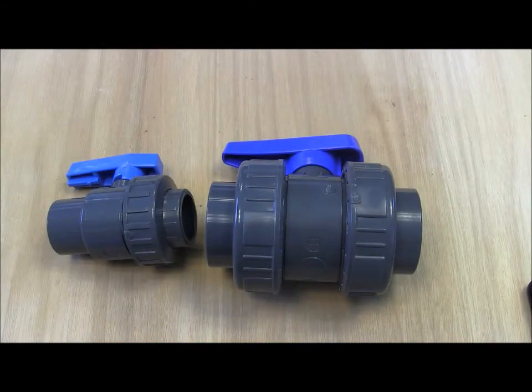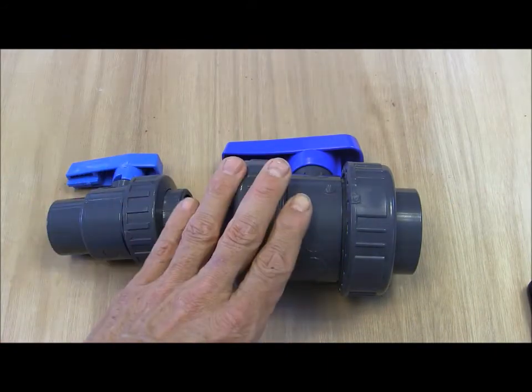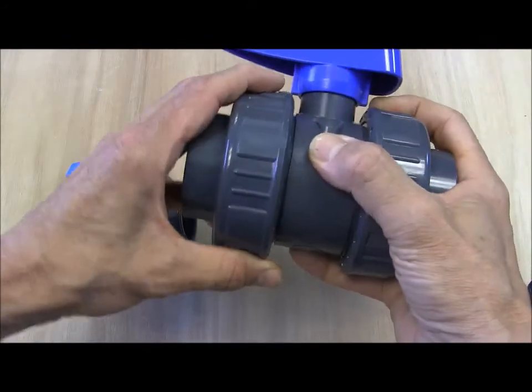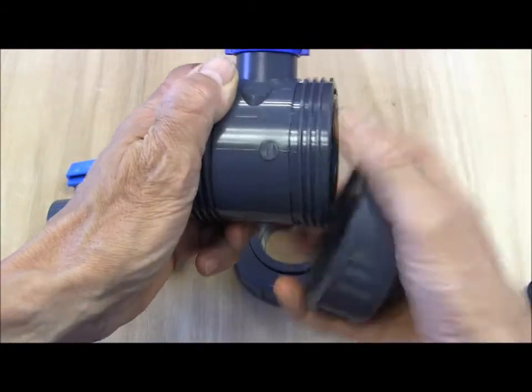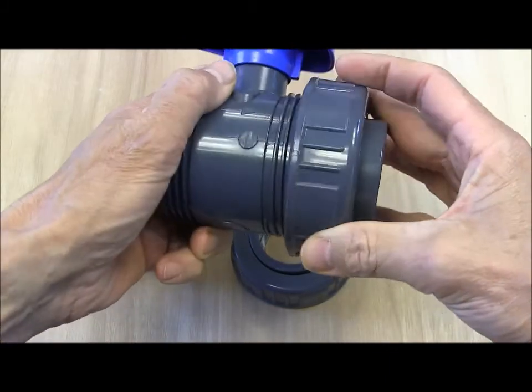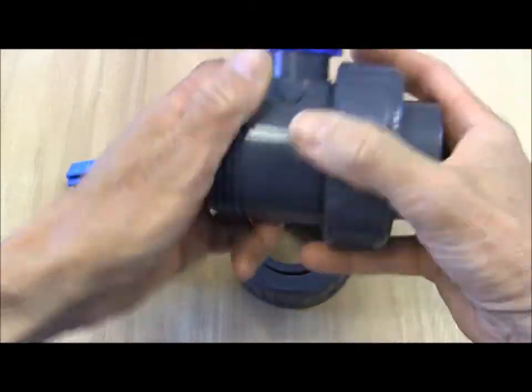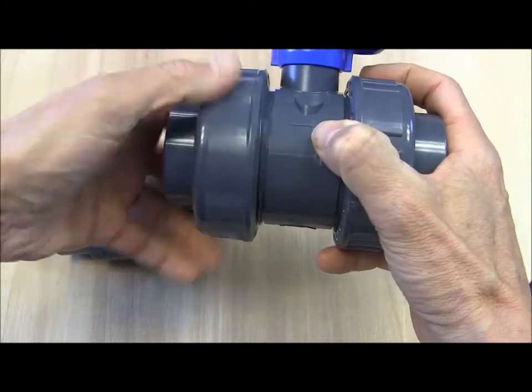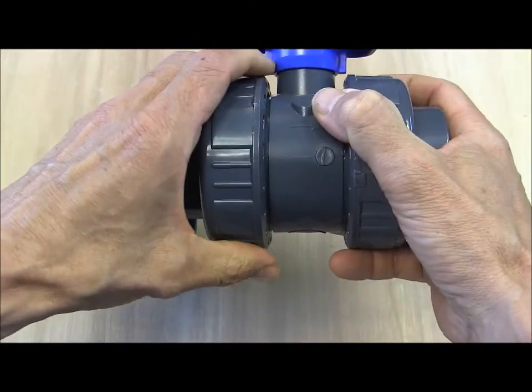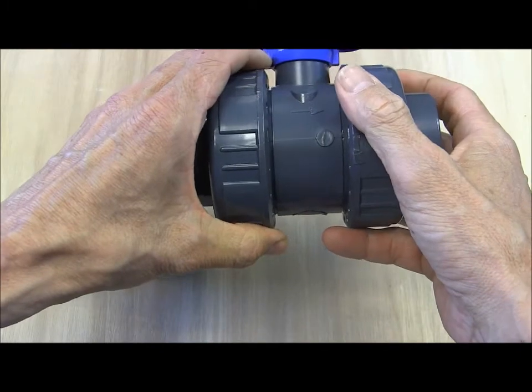Ball valves come in two types, single union and double union. The unions enable the separation of the valve from the pipe without having to cut the pipe and reassembly. This is really useful if we want to service the valve or if we need to get access to the pipe work because we fear the valve may be blocked.